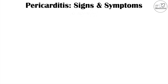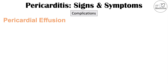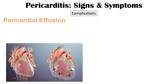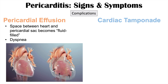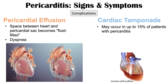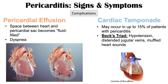Pericarditis can often resolve, but it may cause complications in some patients. These complications include pericardial effusion, where more and more fluid accumulates in the pericardial sac, leading to issues with the heart pumping against the increased fluid. In a pericardial effusion due to inflammation, there can be more fluid that accumulates, causing issues with heart beating, vital signs, and dyspnea or shortness of breath. This leads to the next complication: cardiac tamponade, which may occur in up to 15% of patients with pericarditis. The textbook clinical findings of cardiac tamponade is Beck's triad — hypotension, distended jugular veins, and muffled heart sounds.